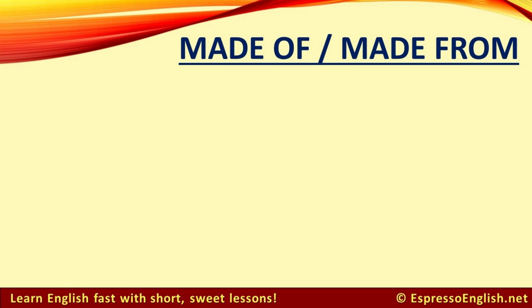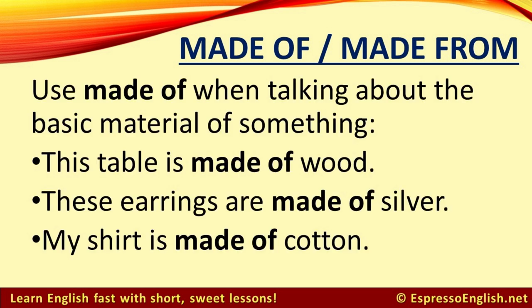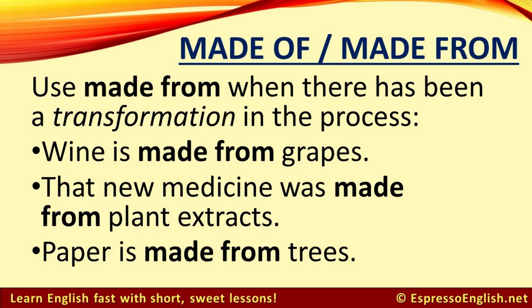Finally, let's look at made of versus made from. In general, we use made of when talking about the basic material of something. For example: this table is made of wood, these earrings are made of silver, my shirt is made of cotton. We use made from when there has been a transformation in the process of making the object. For example: wine is made from grapes, that new medicine was made from plant extracts, paper is made from trees.